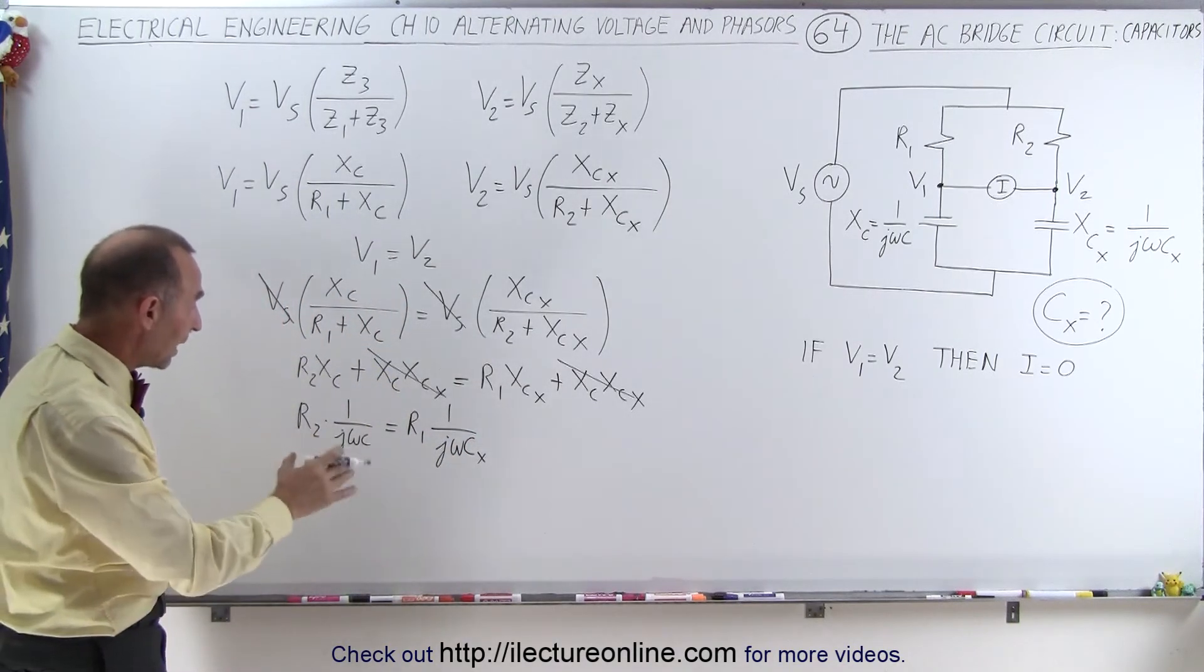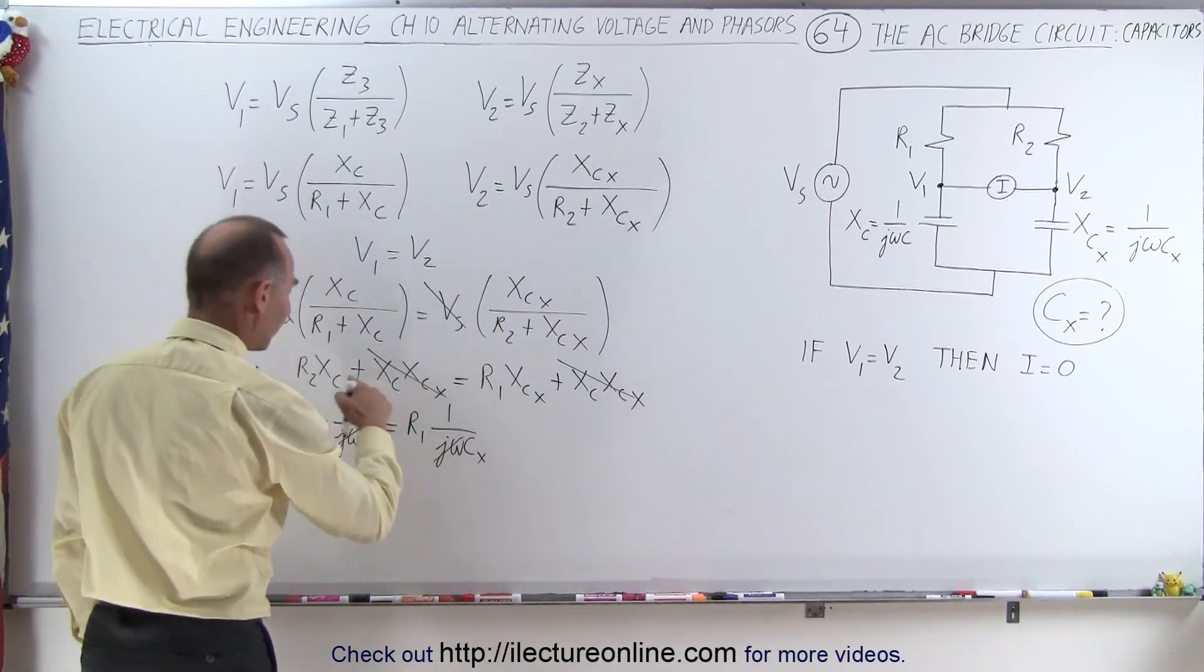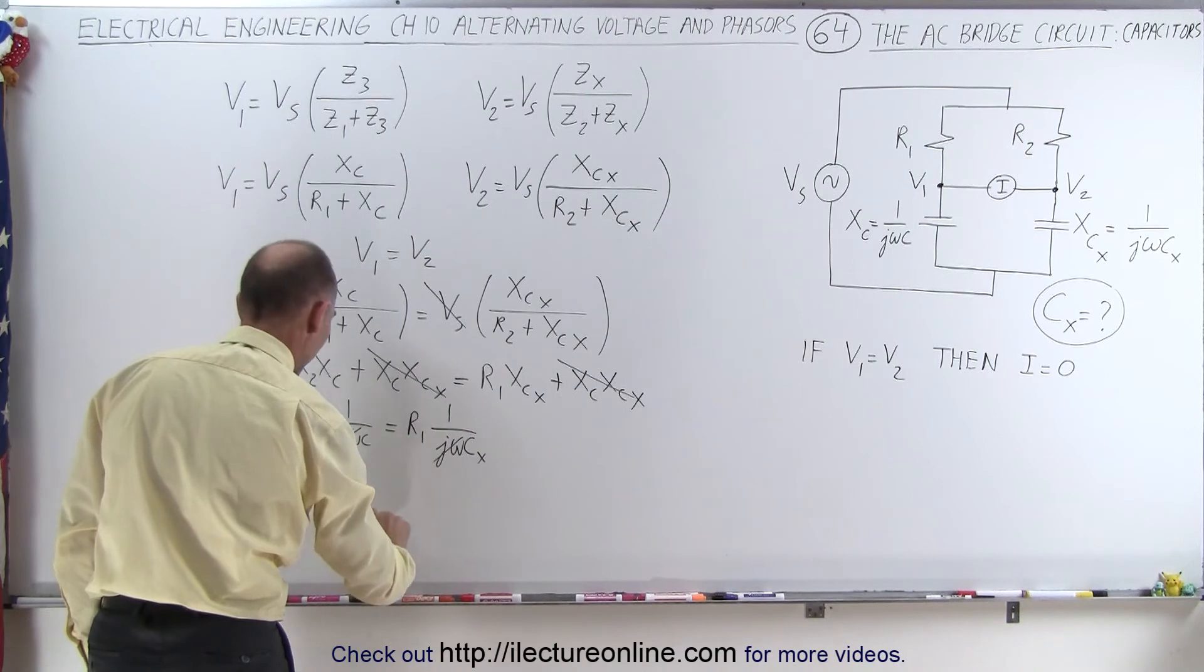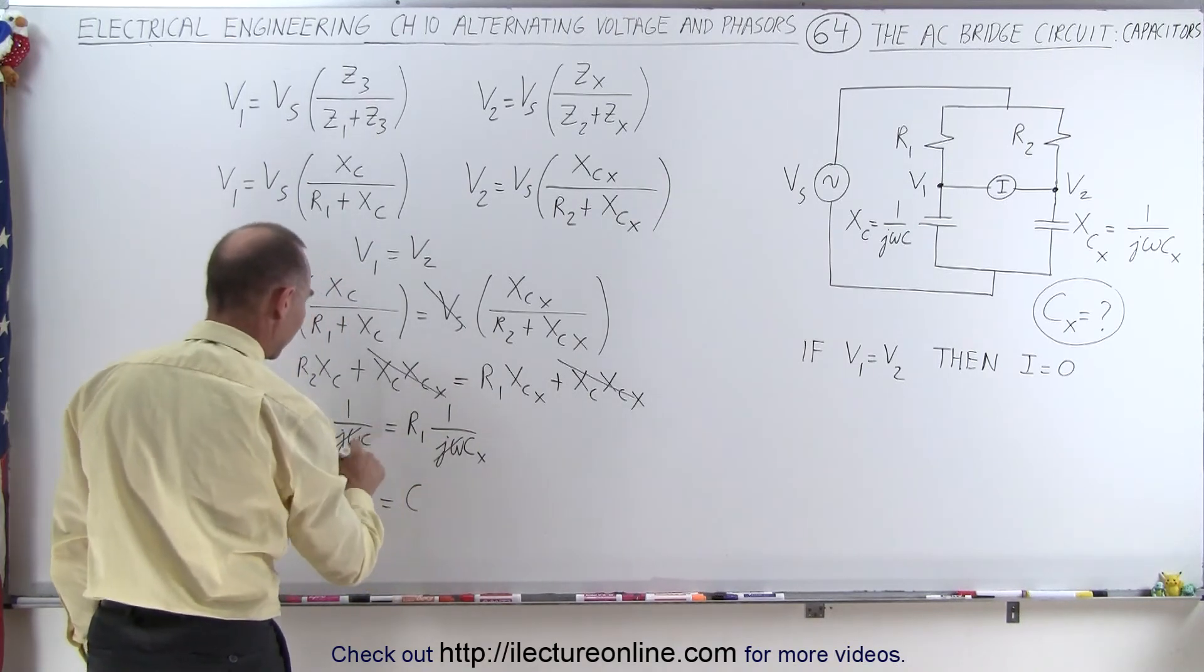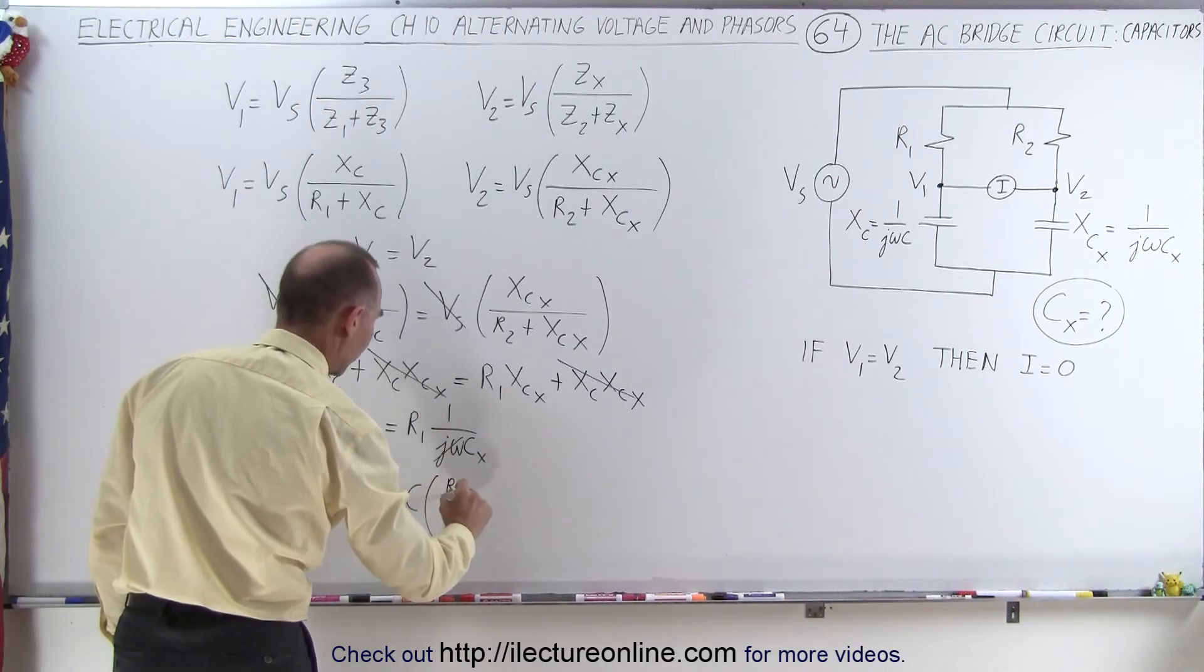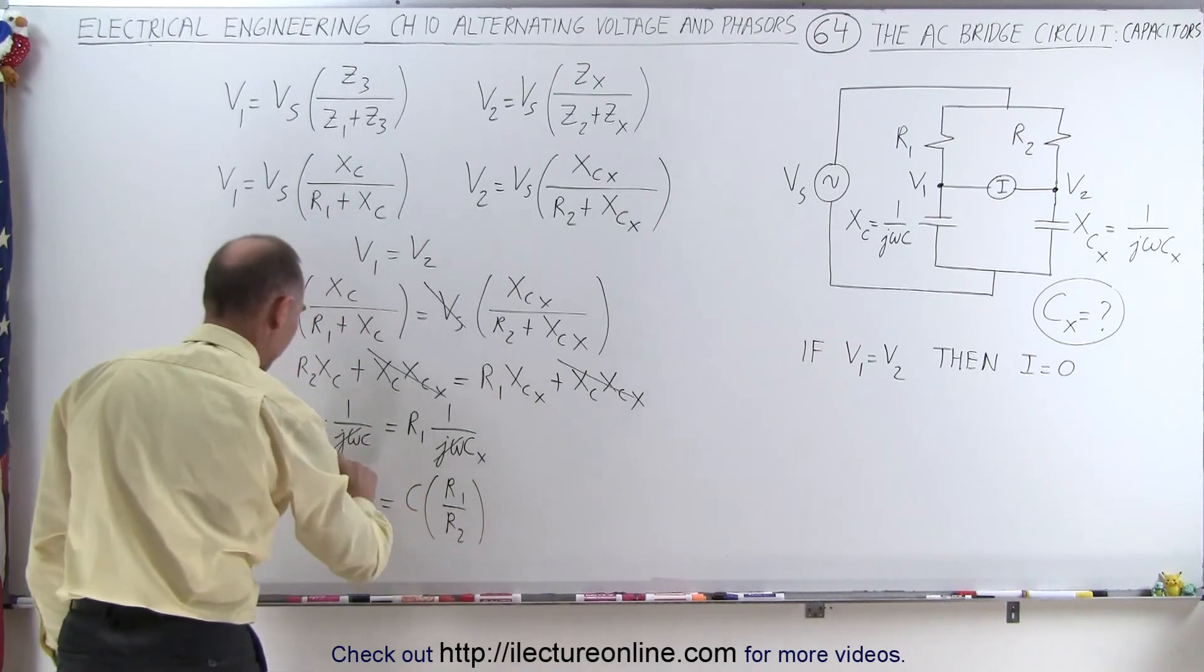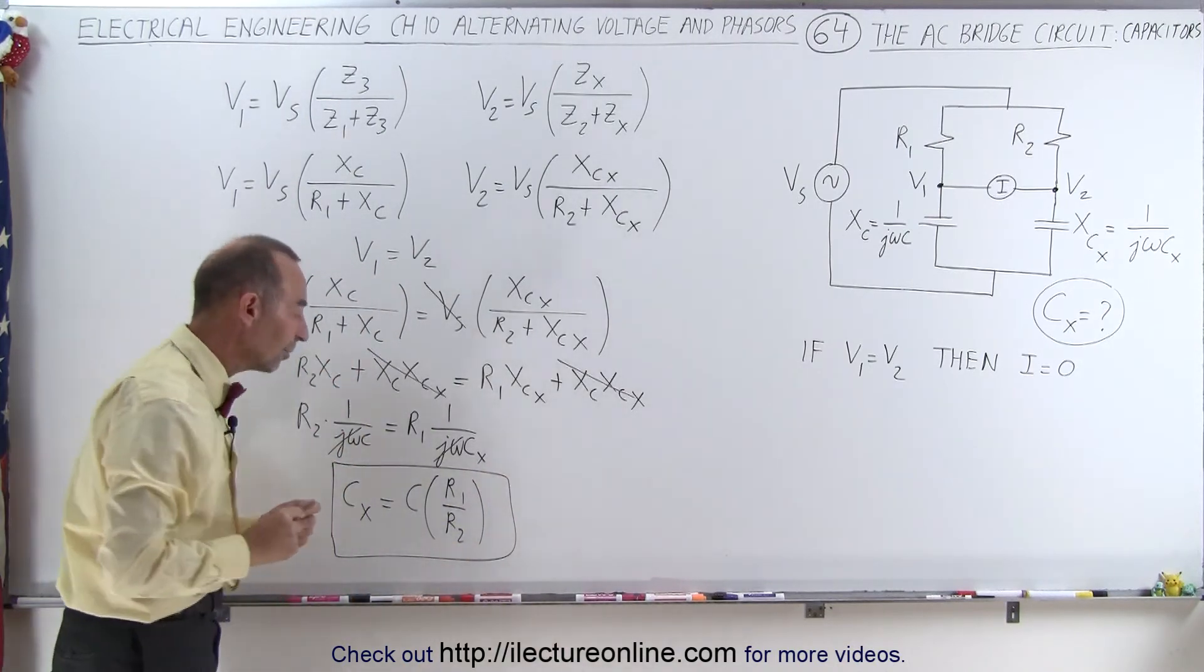Again on both sides, we have J omega that cancels. And now we're going to solve for C sub x, so here we have C sub x is equal to C goes to the other side, this C didn't get canceled out, so that goes over here, times the ratio of R1 divided by R2. And there's the equation we need to find the unknown capacitance, C sub x.